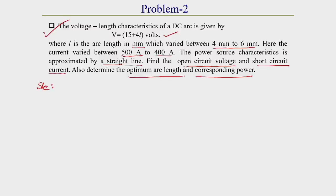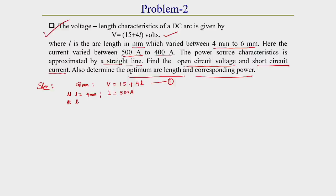The given data: the voltage-arc length characteristics is V = 15 + 4L, where L is in millimeters — this is equation 1. At L = 4 mm, current I = 500 ampere; at L = 6 mm, current I = 400 ampere. The power source characteristics is approximated as a straight line.